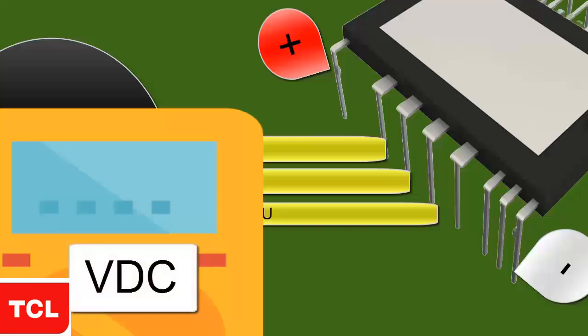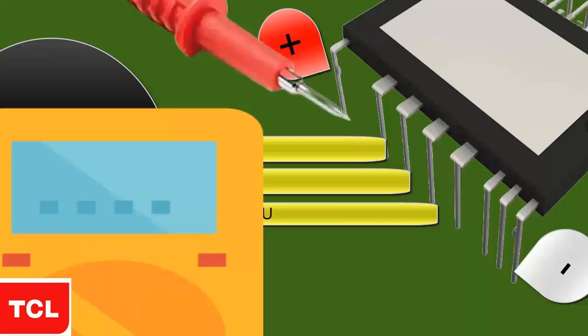Place the red probe of the multimeter on the positive power supply of the IPM electronic circuit. Place the black probe of the multimeter on the negative power supply of the IPM electronic circuit.